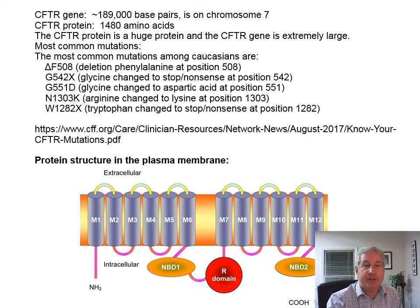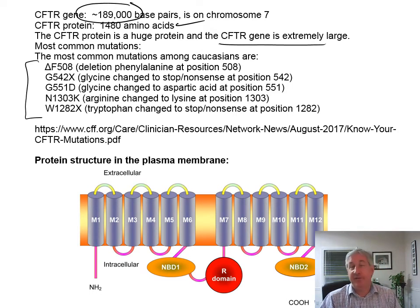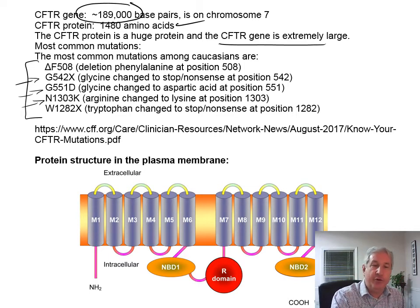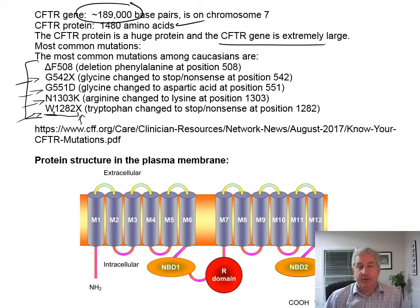The CFTR is a huge protein — approximately 189,000 base pairs and 1,480 amino acids. The gene is extremely large. The most common mutations include delta F508 — deletion of phenylalanine at position 508 — a glycine change to a stop codon at position 542, a glycine to aspartic acid change at position 551, an arginine to lysine change at position 1303, and a tryptophan change to a stop codon at position 1282. 'X' means a stop codon, meaning no protein is produced from that messenger RNA.